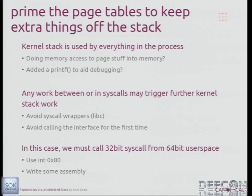One problem is that you have to call these ioctls in order. If you do anything else between the two ioctls, you've used the stack for something else. So you can't use any syscall wrappers like libc's syscall — that'll go off and do other things with your stack. You have to call it directly in assembly. You can't aid debugging by sticking a printf between the two, because that makes yet another syscall in between. You have to be very careful. Additionally, the kernel may go off and do other work between the two on behalf of your process if it's a new code path.